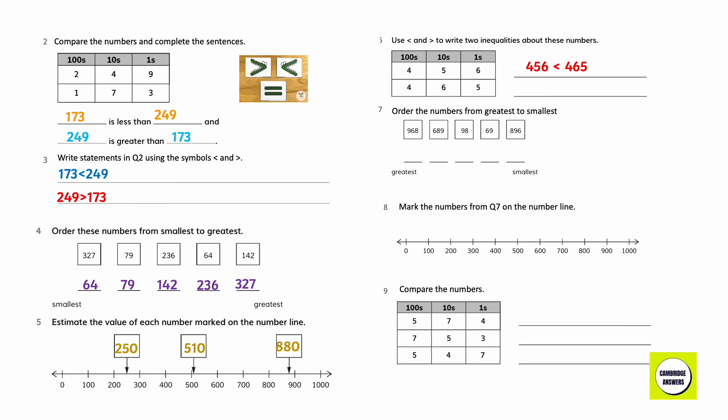Use the symbols to write two inequalities about these numbers. 256 is less than 465. 465 is greater than 456. Order these numbers from greatest to smallest. 968, 896, 689, 98, 69. Mark the numbers from question 7 on the number line. 69, 98, 689, 896 and 968.